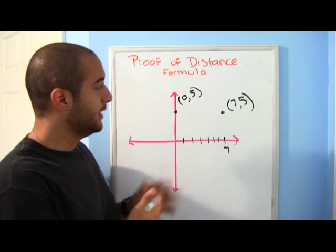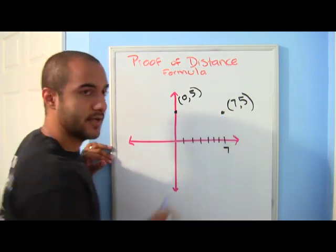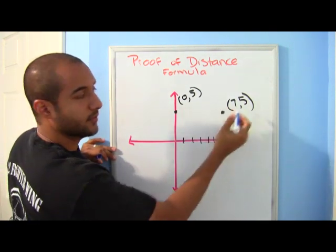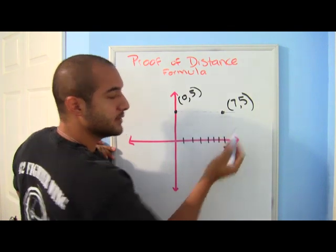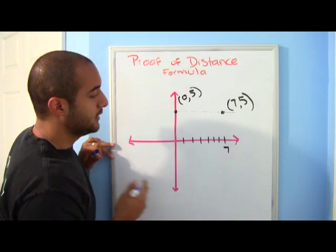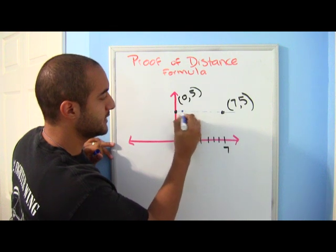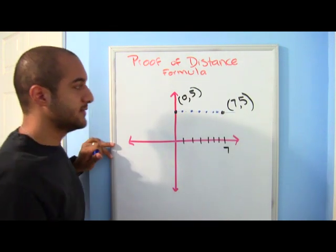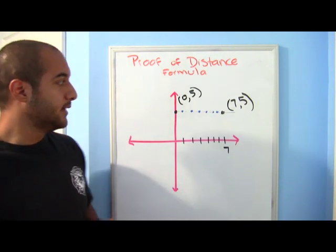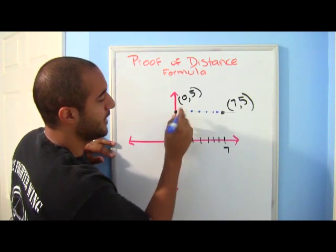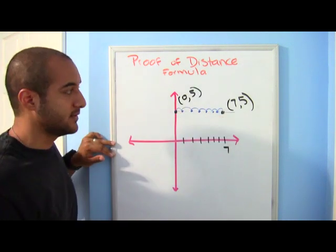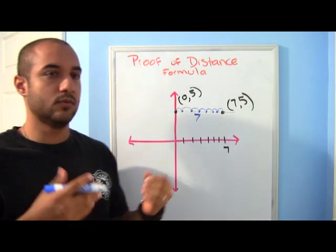Here we are given two coordinates. I like to think of these as houses — here I'm asking you how far away is this house from this house, house A and house B. Notice that they're actually on the same street; their y-coordinates are both five, so they're on the same street. You just want to know how far away it is horizontally. I could actually just count: one, two, three, four, five, six, seven — seven units away.